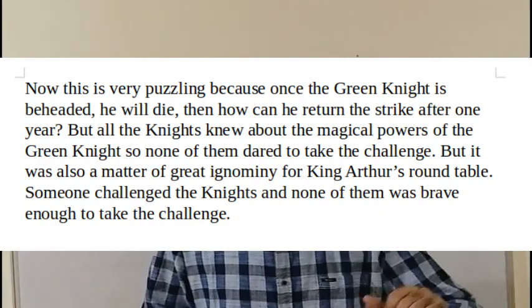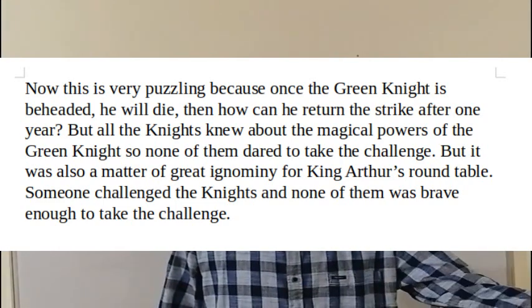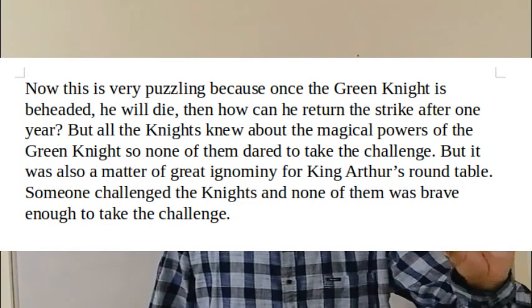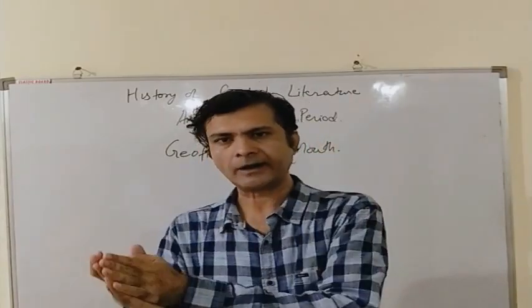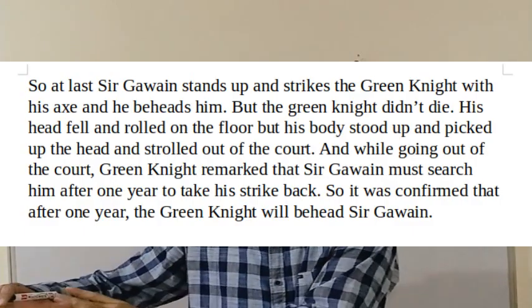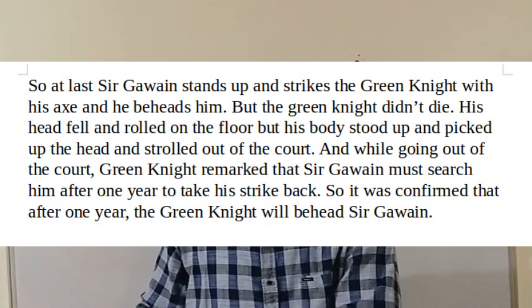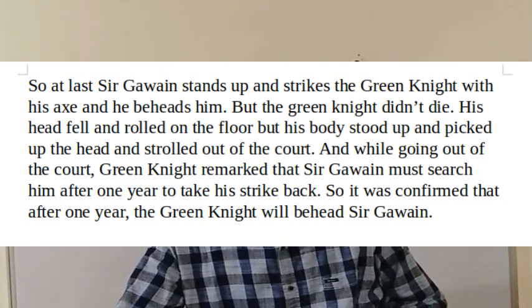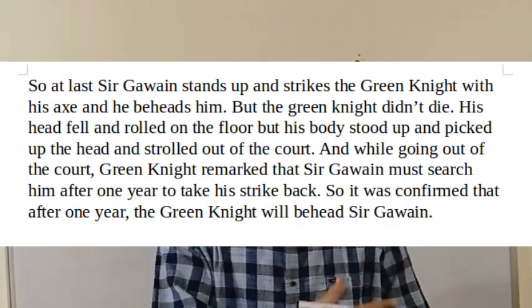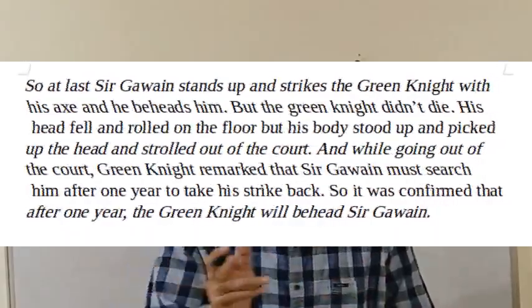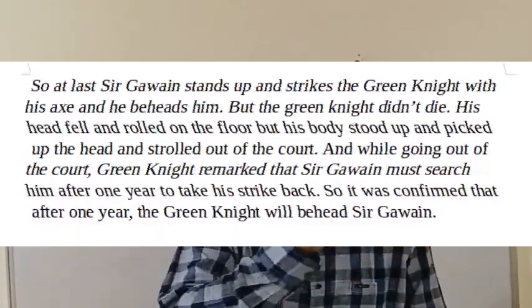Every knight knew the Green Knight was a magical person with miraculous powers, so everyone was afraid. Nobody was ready to take his challenge, and it was also a matter of ignominy that someone came to King Arthur's court and challenged all the knights but none was brave enough to respond. So Sir Gawain stood up and struck the Green Knight with his axe, beheading him — but the Green Knight didn't die. His head fell on the floor and rolled, but the body didn't fall. Instead, he stood up, picked up his beheaded head, and went out of the court.